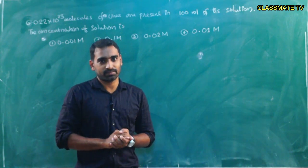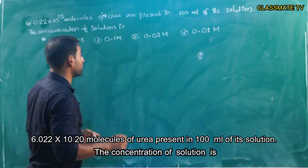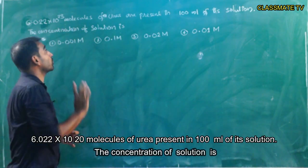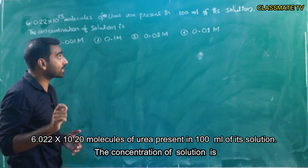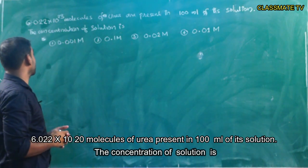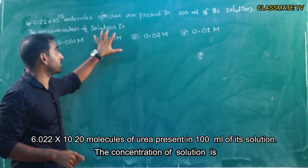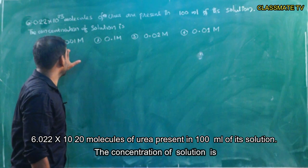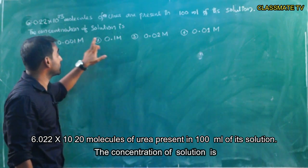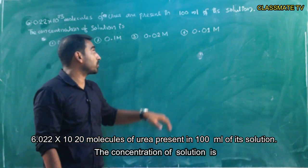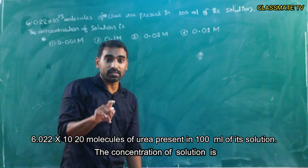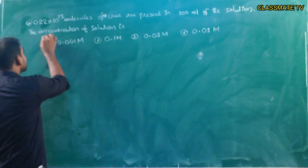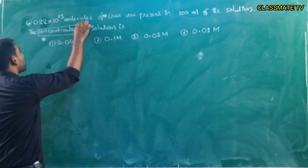The first question: 6.022 × 10²³ molecules of urea are present in 100 ml of its solution. What is the concentration of the solution? The options are 0.01 molar, 0.1 molar, 0.02 molar, and 0.001 molar.